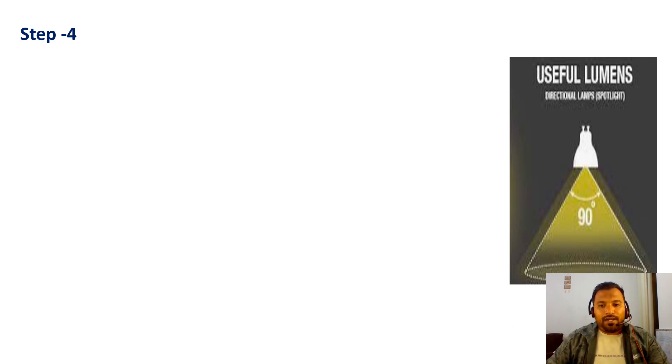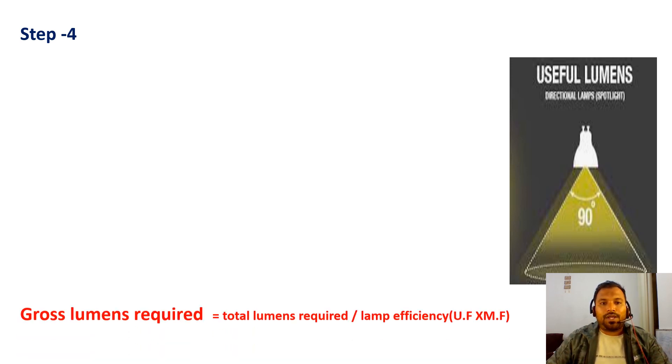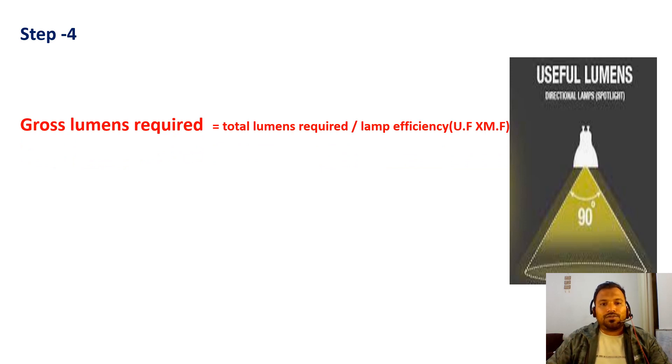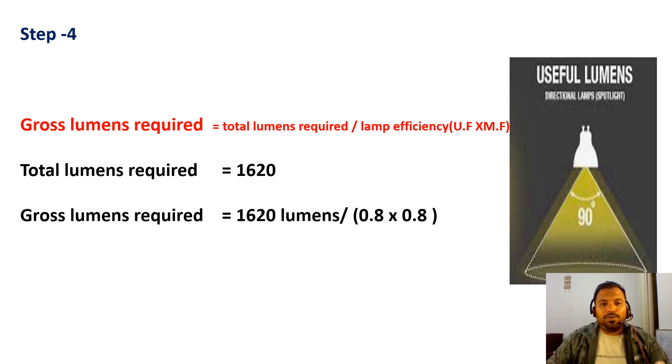Step 4: When light emits total lumens, the whole quantity is not present in the room because of losses called maintenance factors and utilization factors. We have to consider these values. Gross lumens required equals total lumens required divided by lamp efficiency. Lamp efficiency is utilization factor into maintenance factor, generally 0.8 into 0.8. So gross lumens required is 1620 divided by 0.8 into 0.8, which equals 2531.25 lumens.